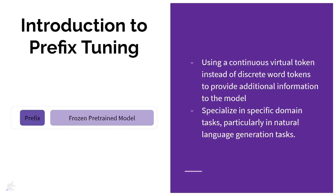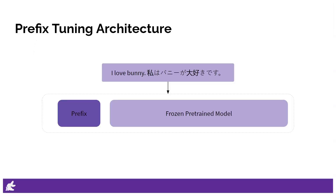Prefix Tuning falls under the category of Soft Prompt Tuning, where the embeddings of input tokens are concatenated with a trainable tensor that can be optimized through backpropagation to improve the model's performance on a target task. Unlike prompt tuning methods that only appended the virtual token to the first layer of the model, Prefix Tuning takes it a step further — the virtual token is now concatenated with the input embeddings in every single transformer layer, allowing it to have a more extensive influence.